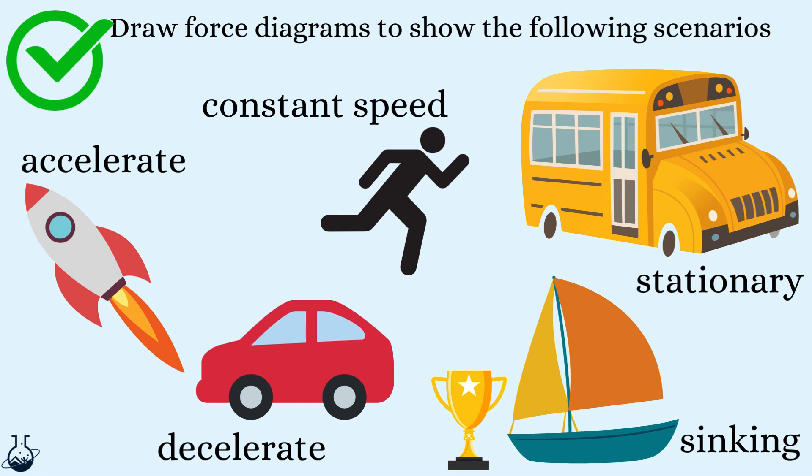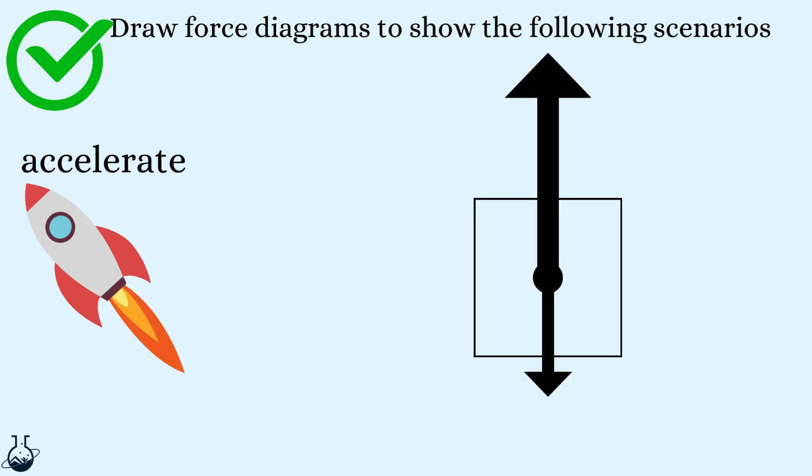Let's go through our answers. Marking pens at the ready. This rocket launching is accelerating. So the thrust force is overall larger than the air resistance. So I can show this using a larger arrow.